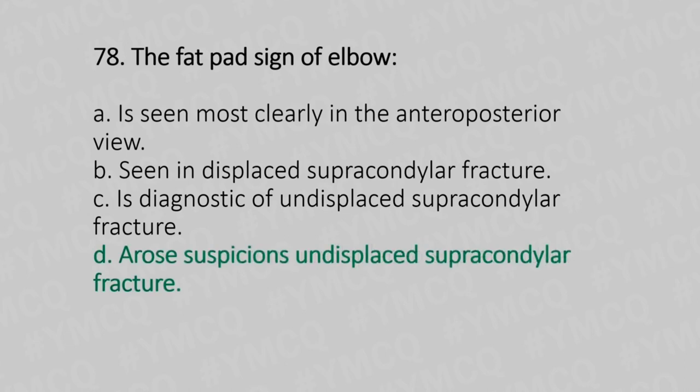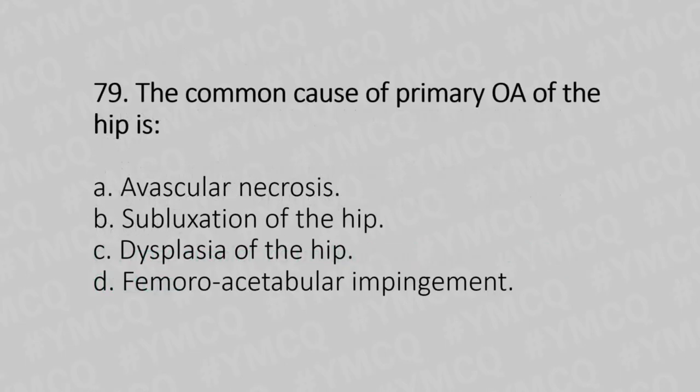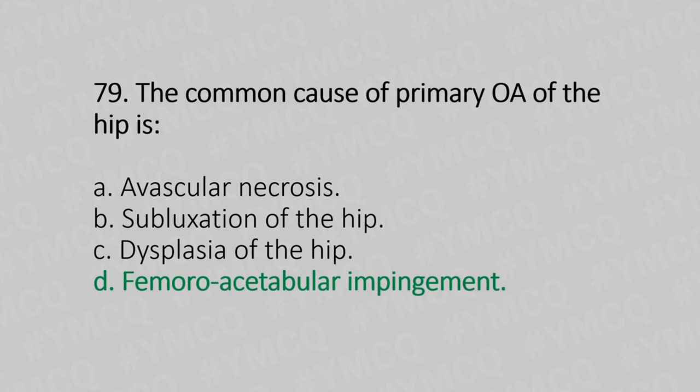Now let's move to question number 79. The common cause of primary OA in the hip is. Option A: avascular necrosis. Option B: subluxation of the hip. Option C: dysplasia of the hip. Option D: femoroacetabular impingement. And the answer is Option D, femoroacetabular impingement.